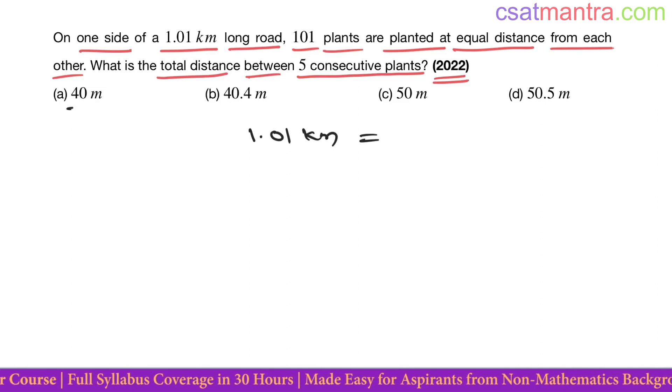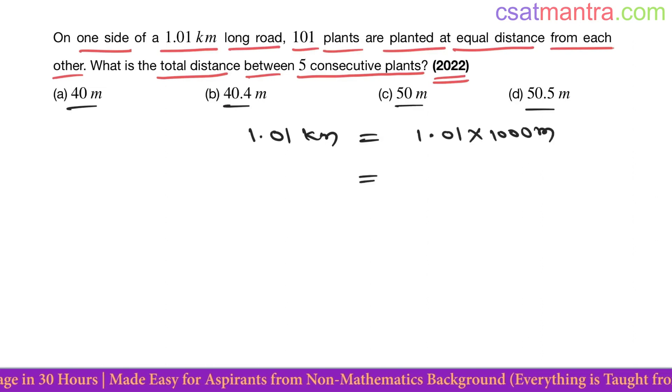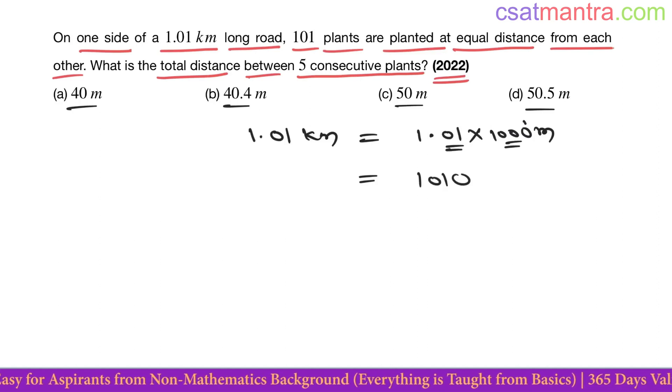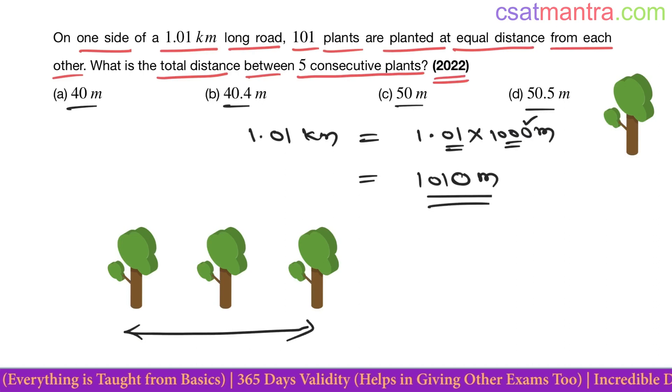Because options are in meters, one kilometer is 1000 meters. So 1.01 becomes 1010 meters long road. See, to plant three plants in this distance, you have to divide this distance into two parts. Three plants need two parts.